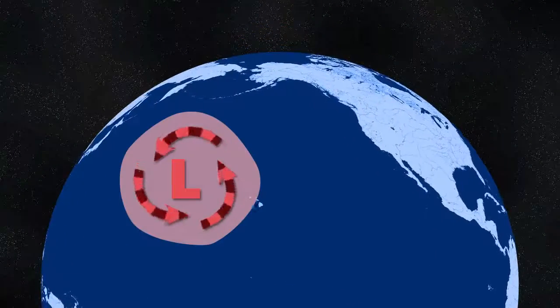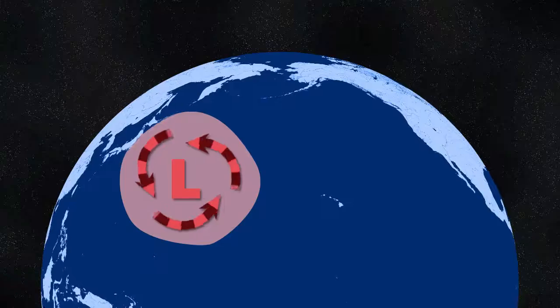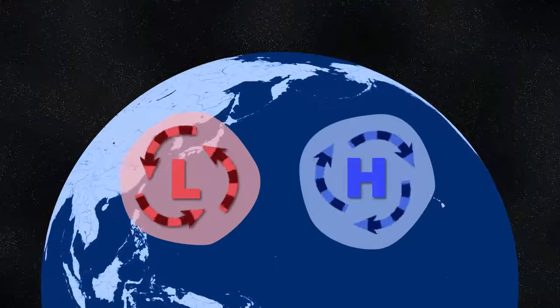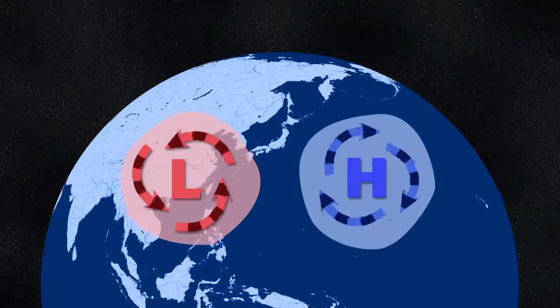In the northern hemisphere, a low pressure system will have air circulating counterclockwise as it flows into the center. A high pressure system will circulate clockwise as it flows away from the center.